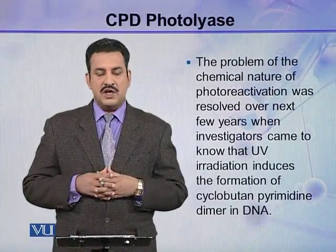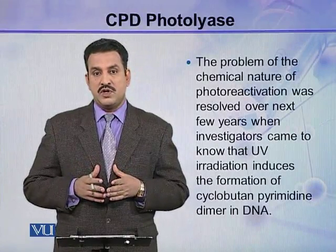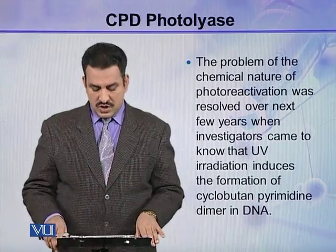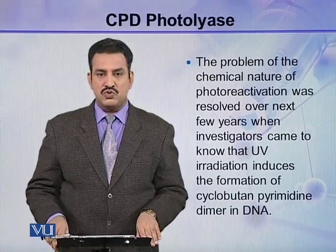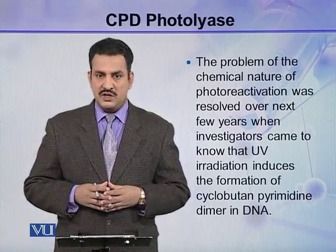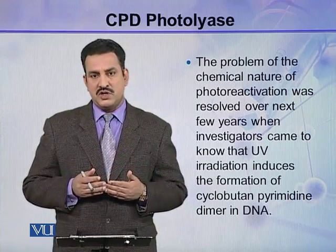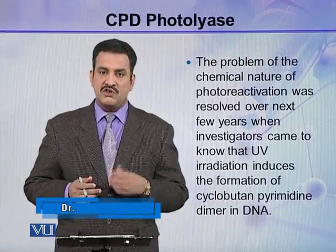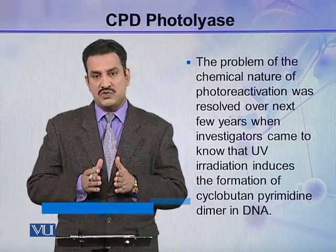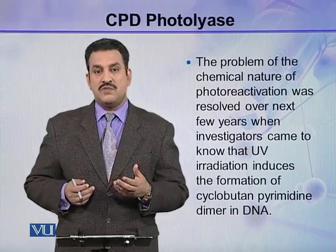As you know, Dulbecco and Claude S. Ruppert could not explain the chemical basis of the phenomena of photoreactivation. The problem of the chemical nature of photoreactivation was resolved over the next few years when investigators came to know that UV irradiation induces the formation of cyclobutane pyrimidine dimers in DNA. Before that, scientists were not aware of this dimer formation and didn't know what happens after UV irradiation in DNA. But when they came to know that cyclobutane pyrimidine dimer is formed in DNA, they came to know the chemical basis of that reversal — that photoreactivation.